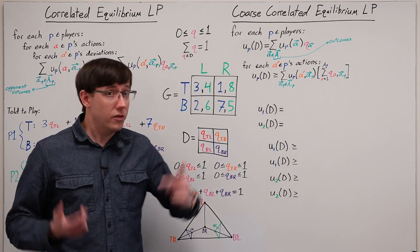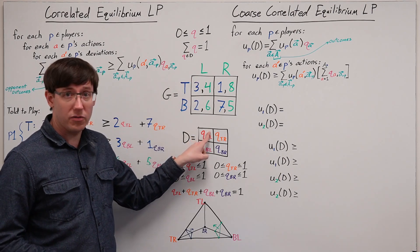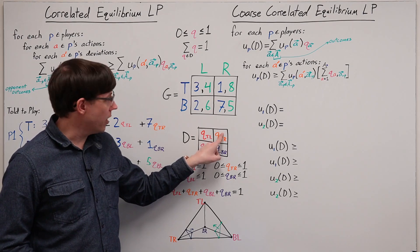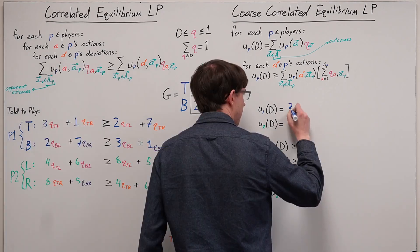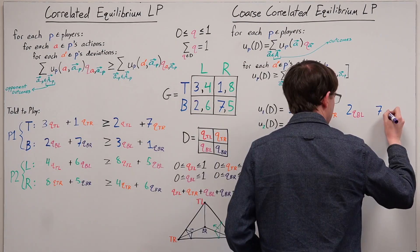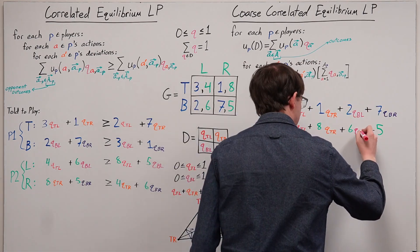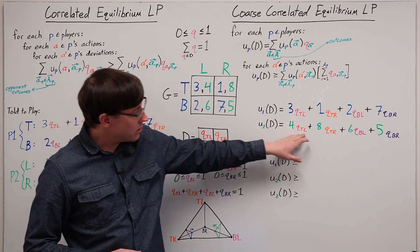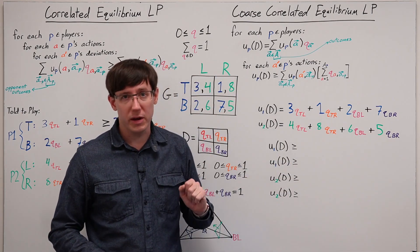For player 1, the utility of participating is 3 times the probability of the top-left outcome, plus 1 times the probability of the top-right outcome, plus 2 times this probability, plus 7 times this probability. Player 2's expected utility is calculated using the same probabilities of each outcome, but taking player 2's utilities from the payoff matrix.